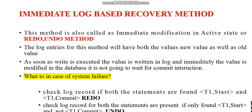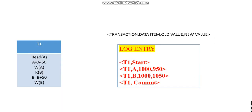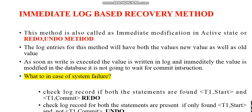In case of system failure, it is going to check the log record. If both statements are found in the log records — that is T1 comma start and T1 comma commit — then it is going to redo: set the data item to the new value. Next, it checks the log record; if only one is found — T1 comma start but not T1 comma commit — then it is going to do undo. So: redo when both statements are found, undo if only the start entry is found without a commit.